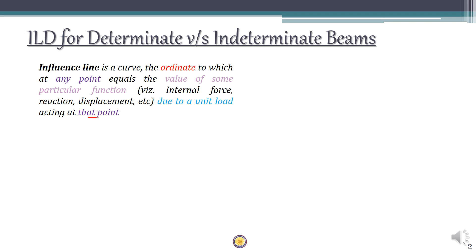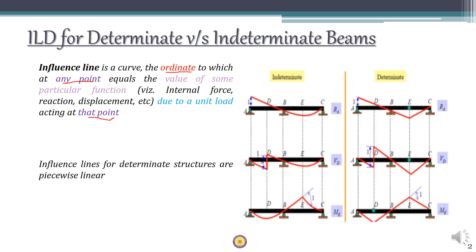When a unit load is acting at a point, the value of the function at that point will be marked as an ordinate at that point. From the definition it is clear that there is no discrimination between determinate beams and indeterminate beams in the ILD definition — it is possible to draw ILD for both determinate as well as indeterminate beams.